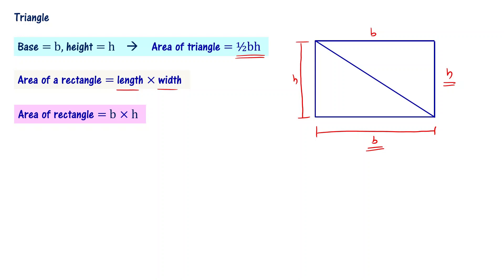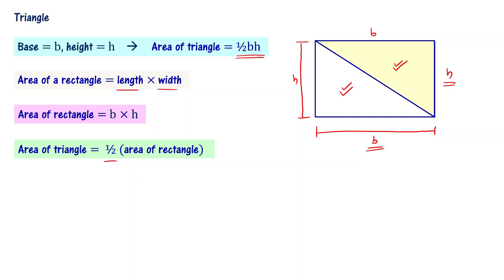Look at this figure. This rectangle is made of two identical triangles — one I have given yellow color and the other is in white color. The area of these two triangles are exactly the same. Area of triangle, if you look at it, I can write it as half the area of the rectangle. Half of the area gives the white triangle, and the other half gives the yellow triangle. Area of triangle is half times area of rectangle. We know area of rectangle is B times H, so area of triangle is going to be half B times H — half BH.